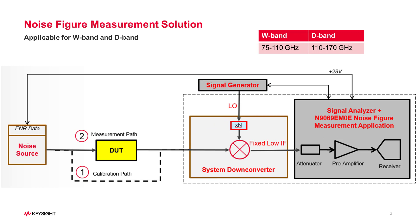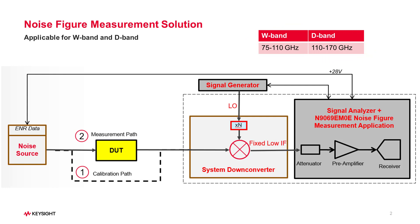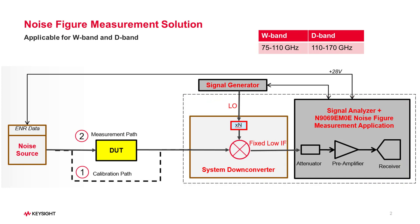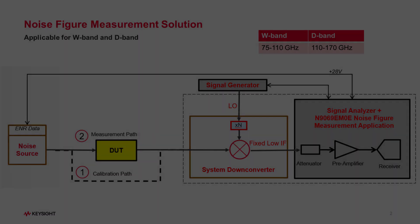The frequency coverage is from 75 GHz to 110 GHz for W-Band signals and 110 GHz to 170 GHz for D-Band signals. The combination of System Down Converter and Signal Analyzer is considered an equivalent instrument, as highlighted in the dotted box.